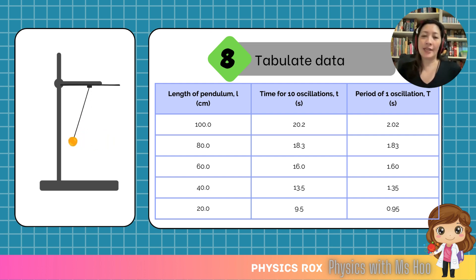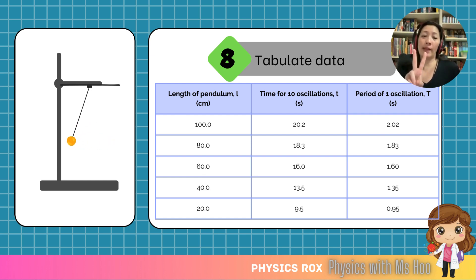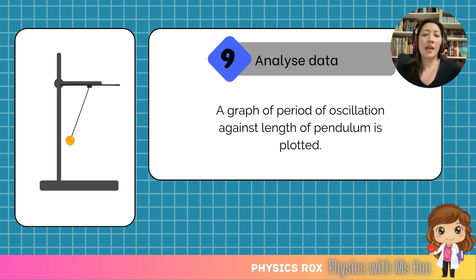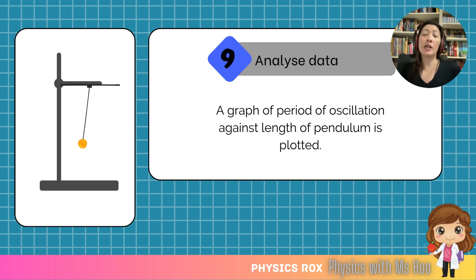For the period of oscillation, it's a calculated value based on taking the time for 10 oscillations divided by 10, which gives us one additional decimal place. So for my data, the period of one oscillation has two decimal places — one more than the time for 10 oscillations. If you had two decimal places for the time for 10, then you should have three decimal places for the period of oscillation. Now that we have our data, we need to analyze it, and for these kinds of experiments, the best way is to draw a graph.